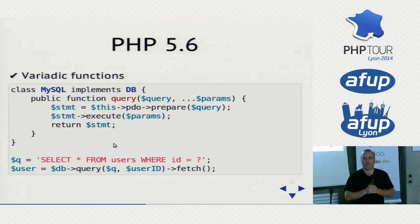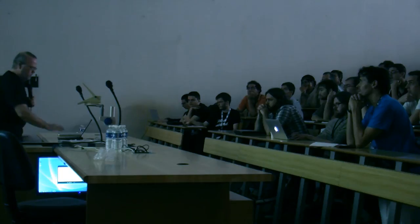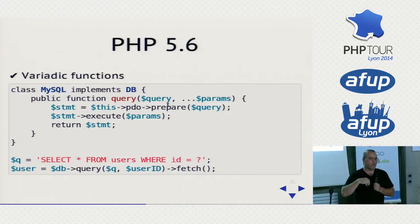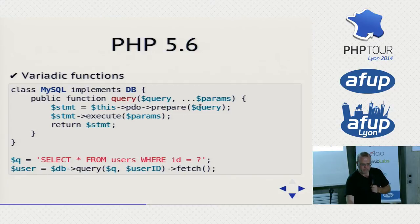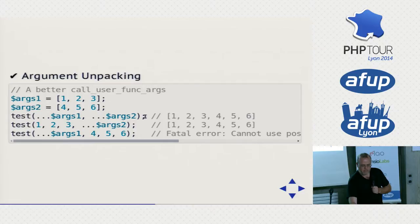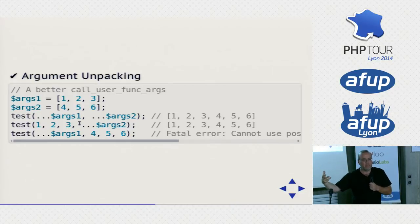PHP 5.6 is coming out soon — a couple of months, a couple of weeks, we'll see, depending how the betas go. New feature: variadic functions using the ECMAScript syntax dot-dot-dot. This means the function takes one required element and then a variable number of extra parameters. We could do that before at the function call level, but it didn't handle references — this now handles references perfectly. A partner feature is argument unpacking: you can also use the dot-dot-dot syntax to pass stuff in. If you have a function that takes six arguments, you can pass in two arrays each containing three elements and the dot-dot-dot will unpack it — the receiving function doesn't need to be variadic.